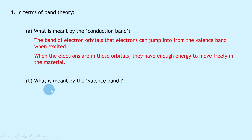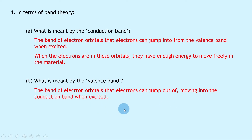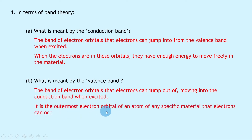Part b says: in terms of band theory, what is meant by the valence band? Again, straight from the notes, the valence band is the band of electron orbitals that electrons can jump out of, moving into the conduction band when excited. It is the outermost electron orbital of an atom of any specific material that electrons can occupy.